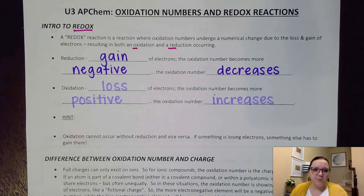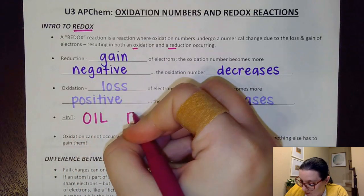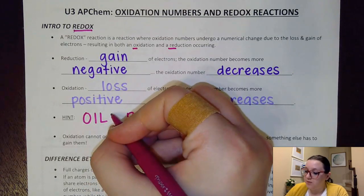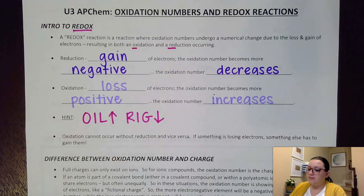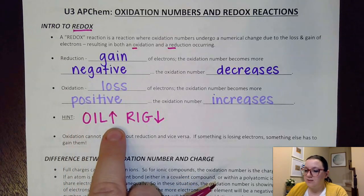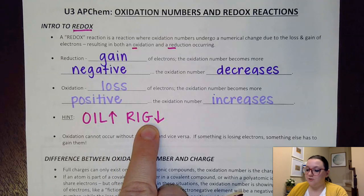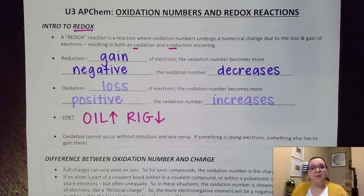There are several ways of remembering oxidation and reduction. I happen to like the saying OIL RIG. An oil rig digs down into the ground and the oil comes up. So: Oxidation Is Loss of electrons, but causes the oxidation number to go Up; Reduction Is Gain of electrons, but causes the oxidation number to Go down. It helps you remember both what happens with electrons and with the oxidation number.